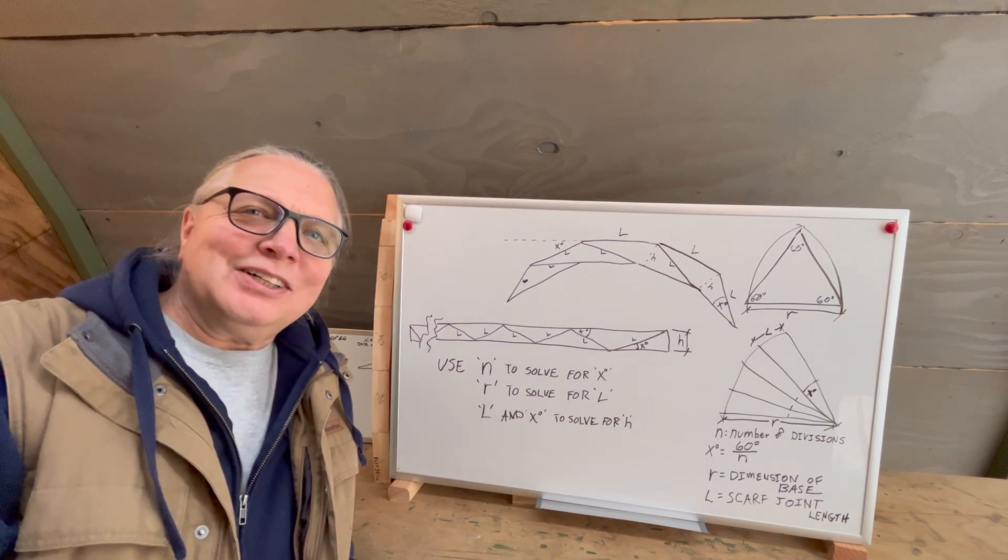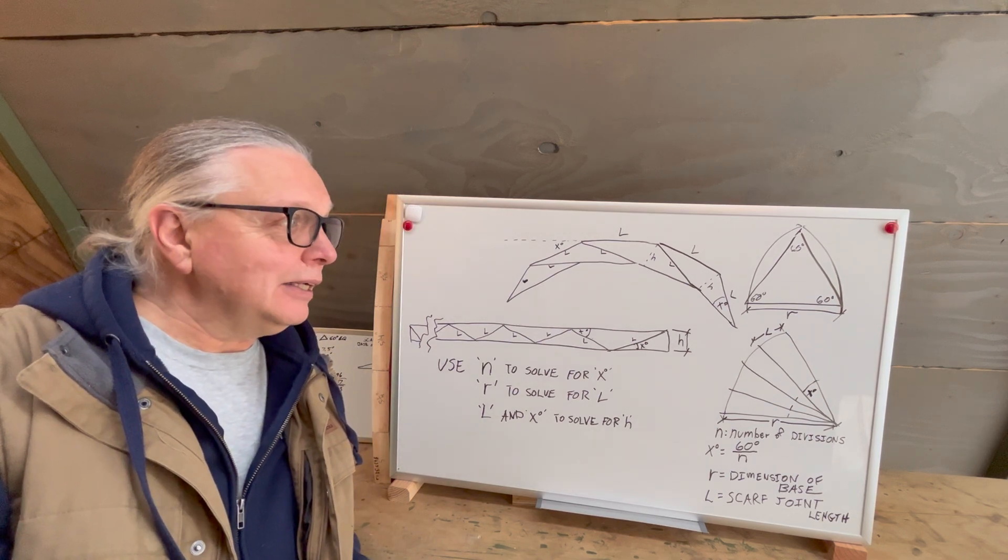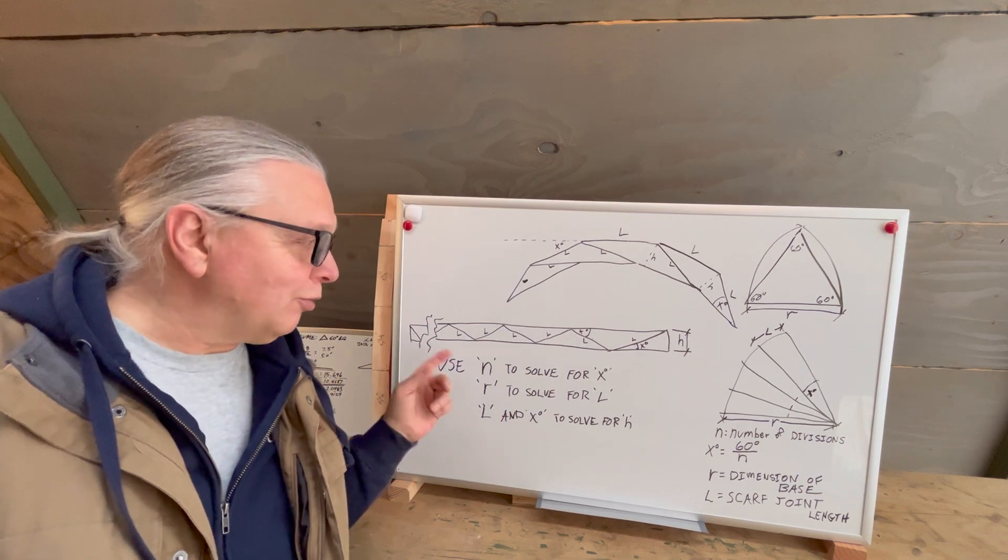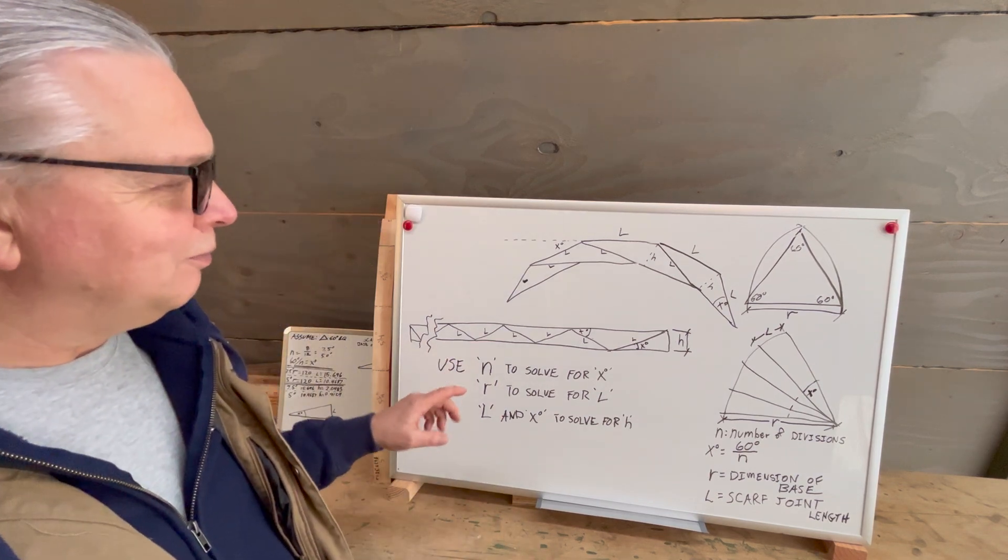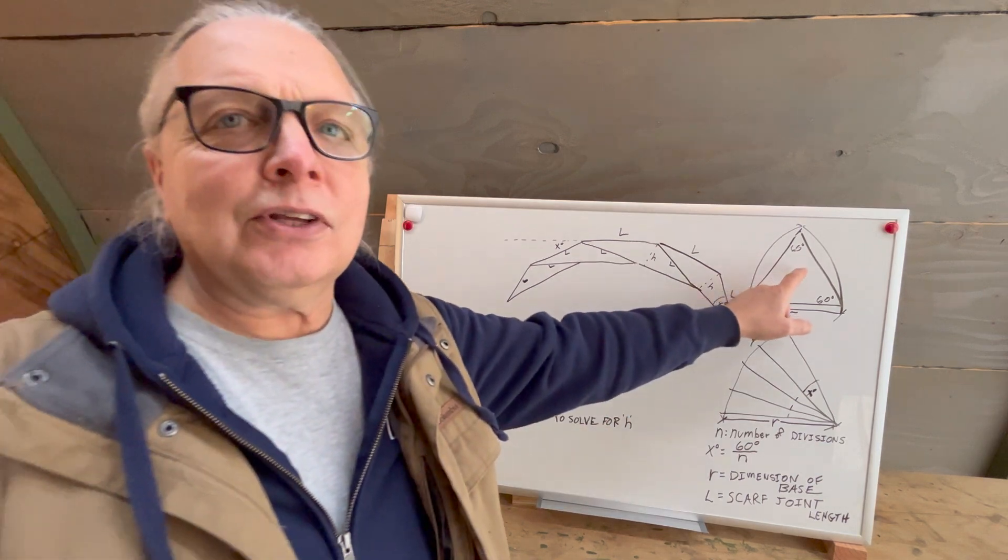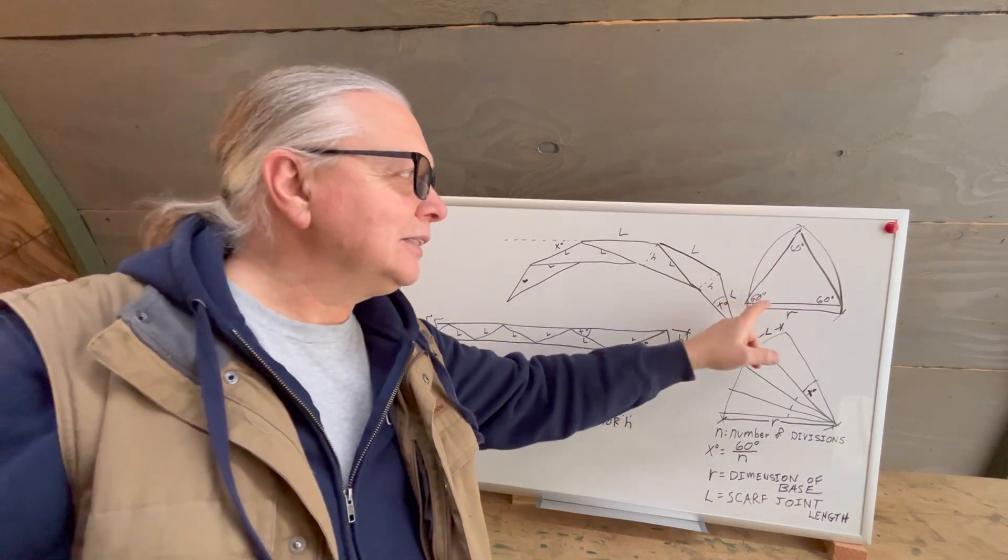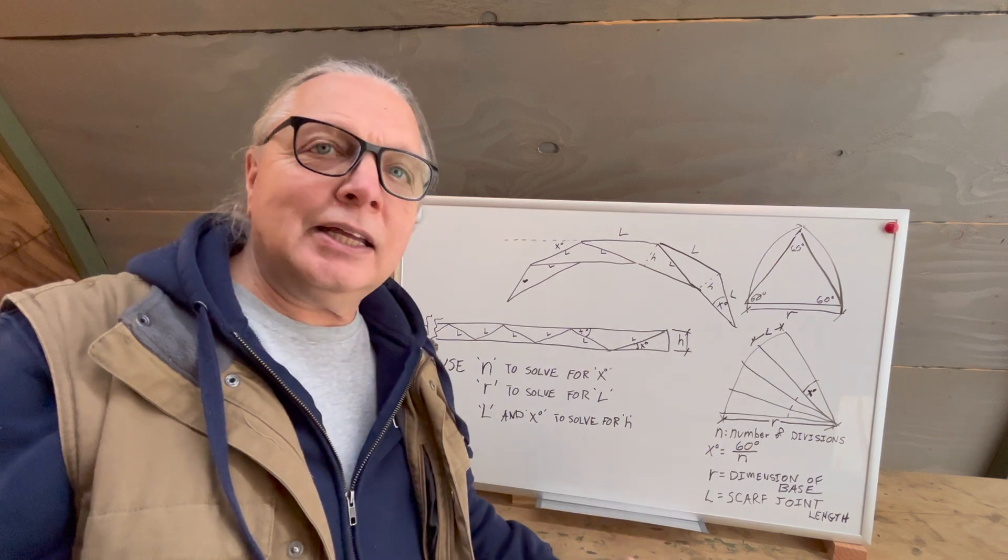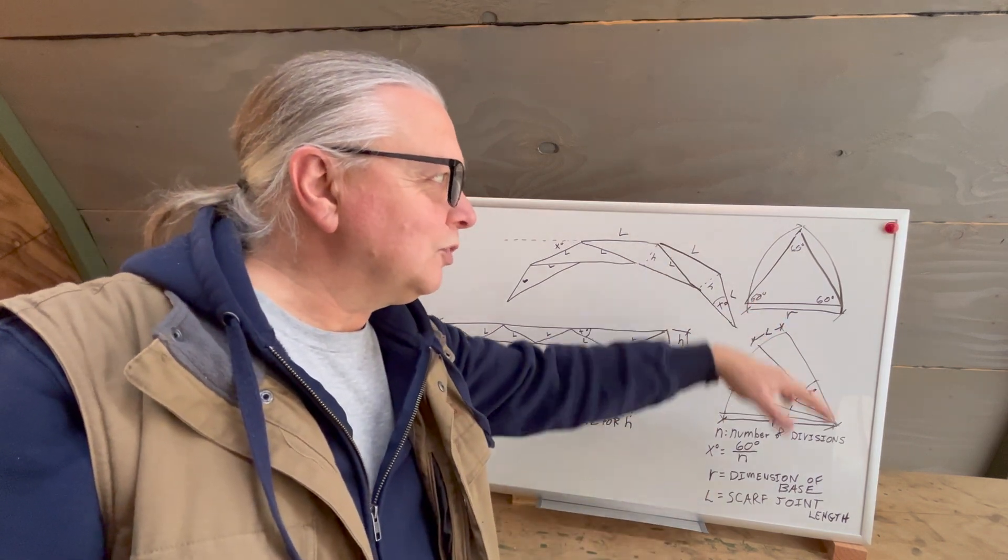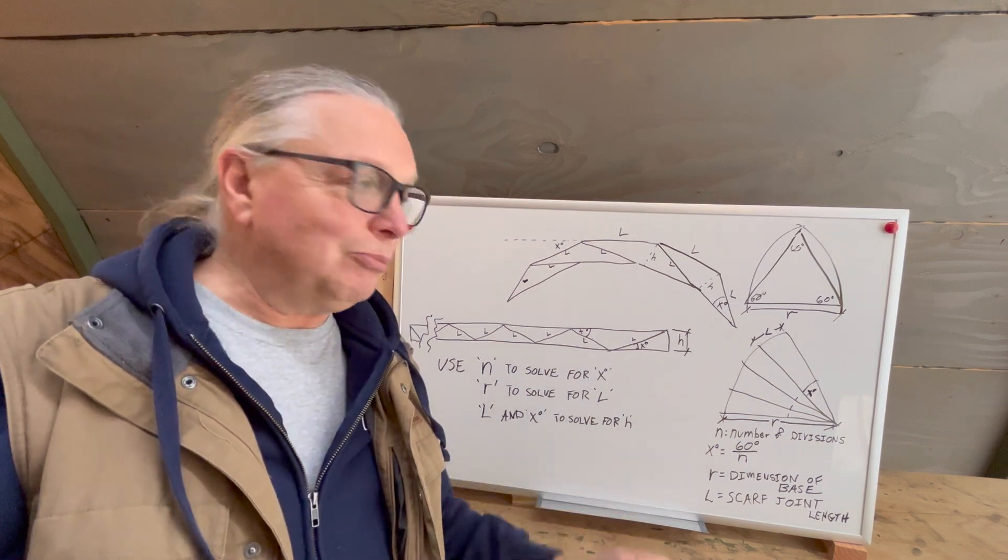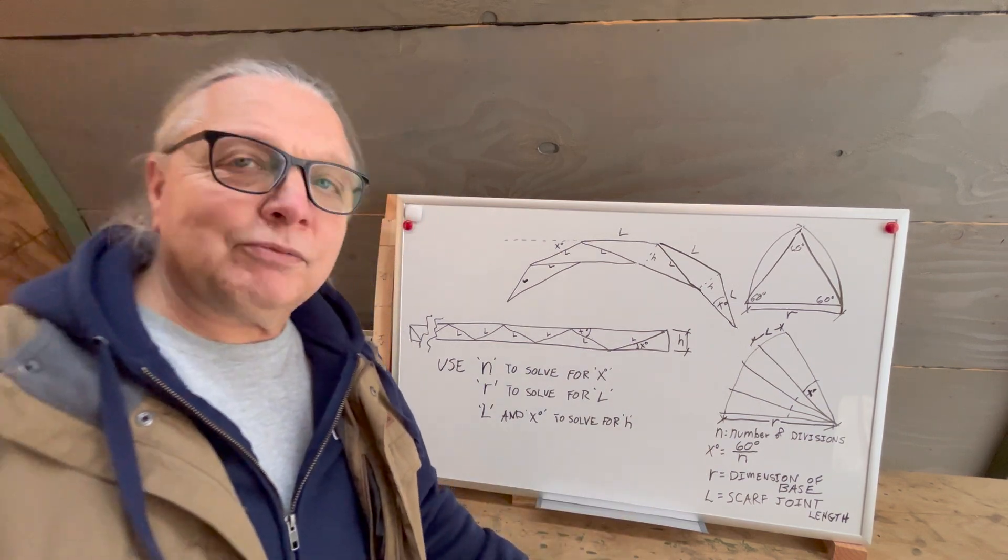So today we're going to talk about the math. It comes down to basically solving for three different problems. First off, you want to assume that you're using a 60 degree equilateral triangle. That will help you just as an assumption, basic assumption. We'll start there and work from there.